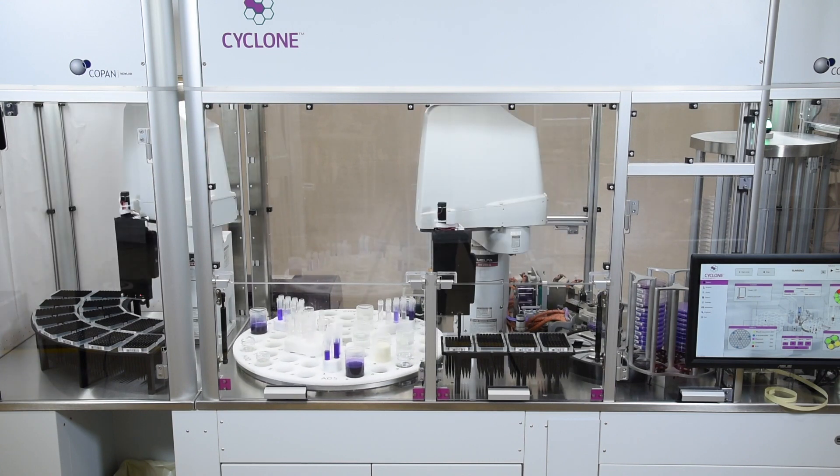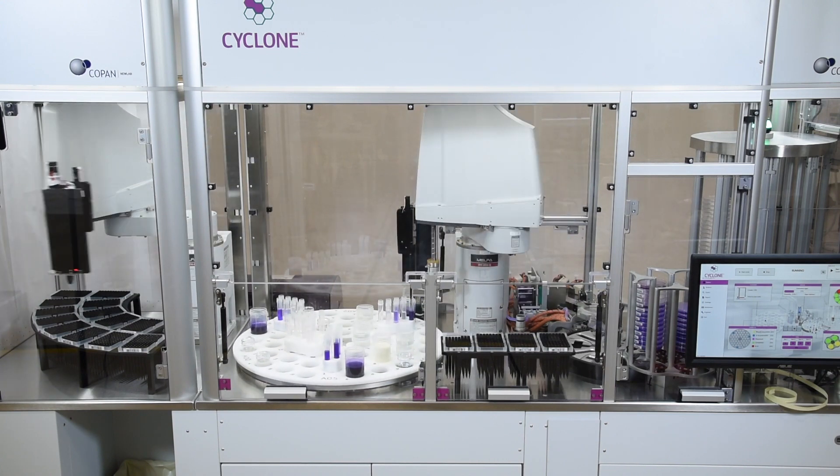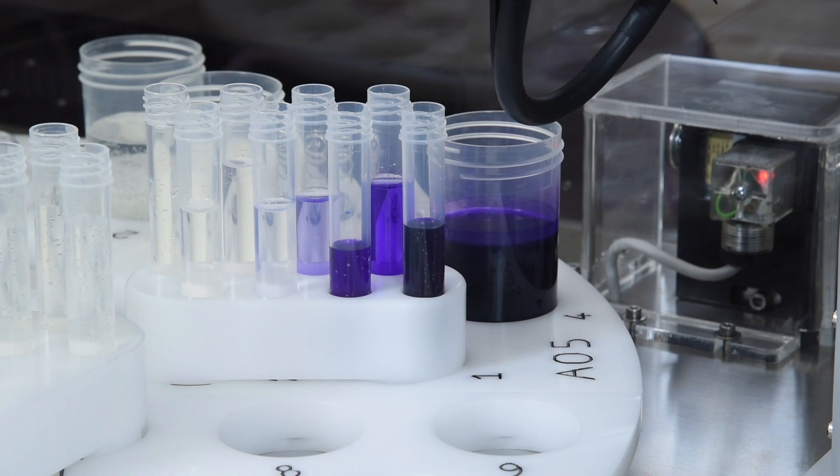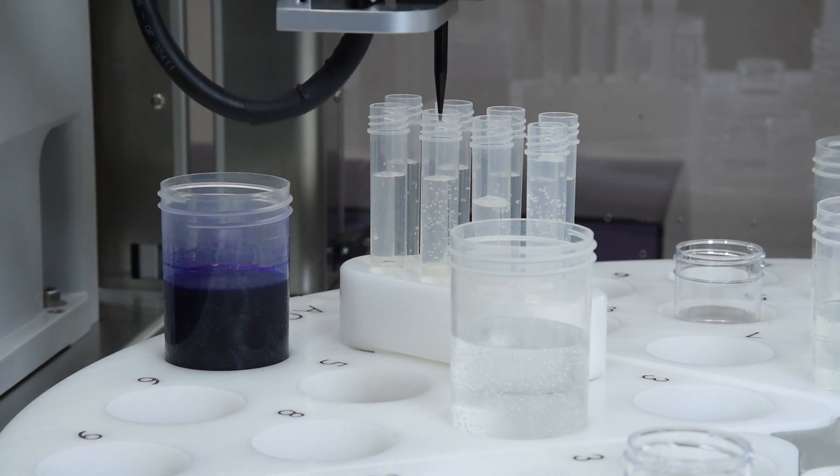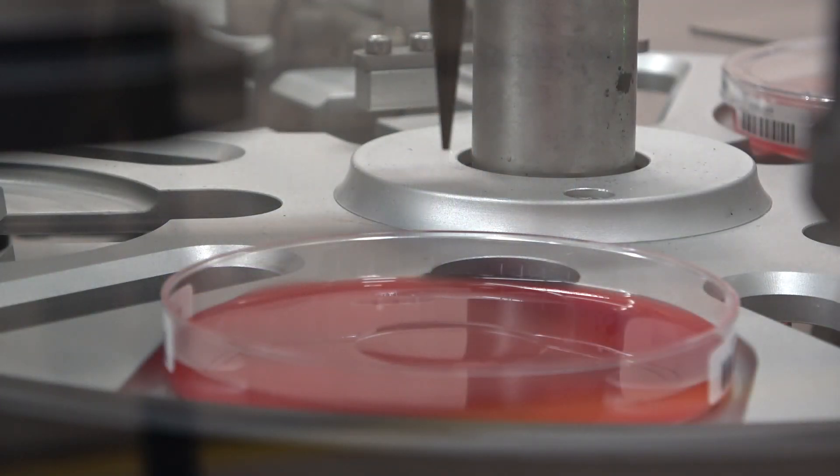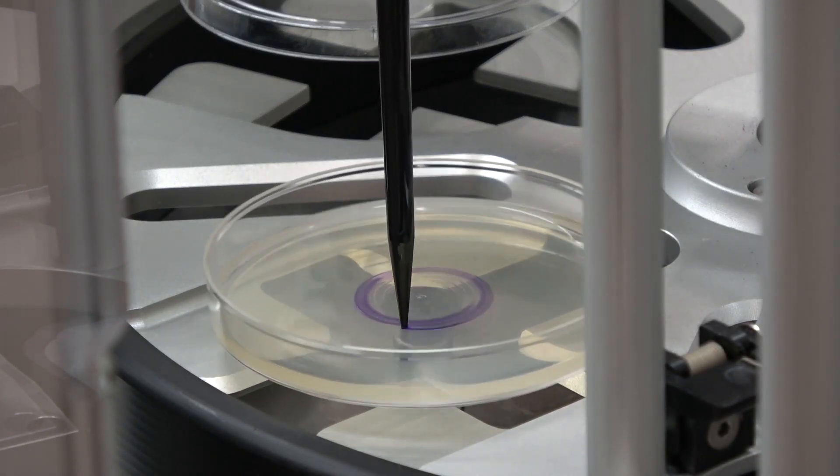The Cyclone automates many aspects of sample processing so laboratory professionals can be deployed to higher level tasks that require their expertise. Cyclone performs classic microbiology techniques such as sample diluting, pour plating, spiral plating, and spread plating with a high degree of precision and reproducibility only possible with automation.